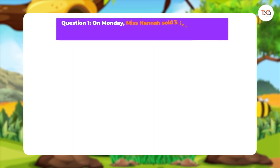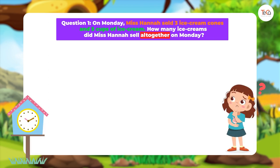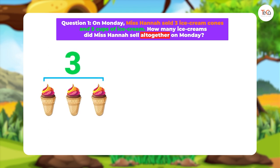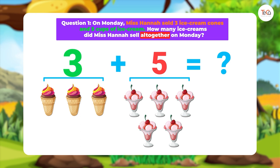Question 1. On Monday, Miss Hannah sold three ice cream cones and five cups of ice cream. How many ice creams did Miss Hannah sell altogether on Monday? You can draw three ice cream cones and five cups of ice cream. To find the total, just add three and five, and count all the ice creams together.